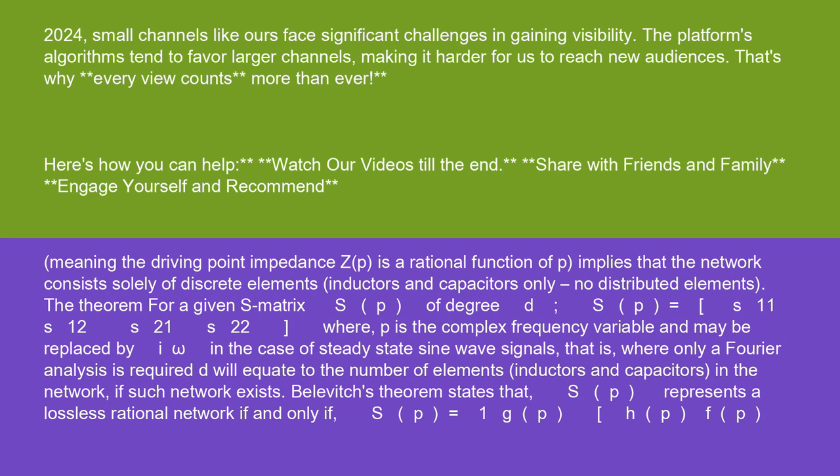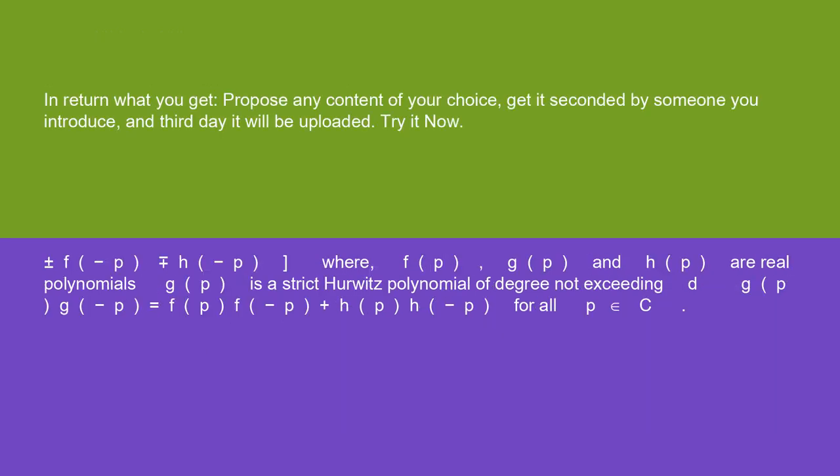If such network exists, Belevitch's theorem states that S(p) represents a lossless rational network if and only if S(p) = (1/g(p)) * [[h(p), f(p)], [±f(-p), ∓h(-p)]], where f(p), g(p), and h(p) are real polynomials.